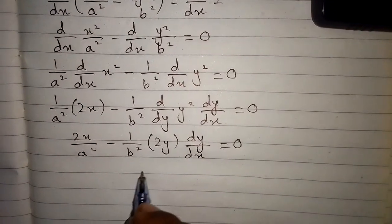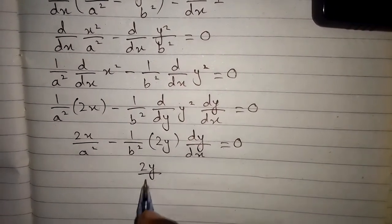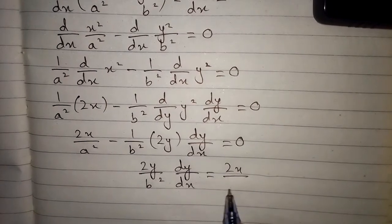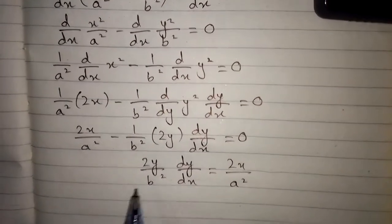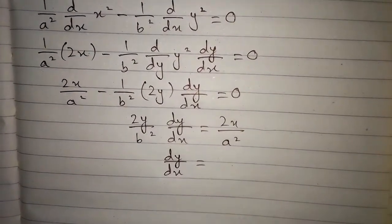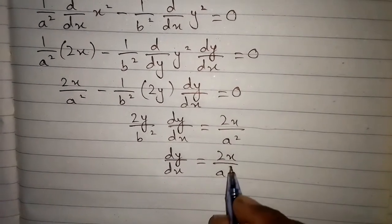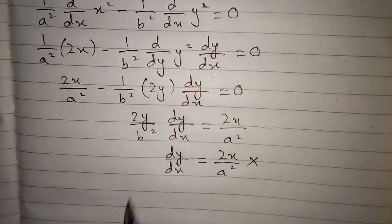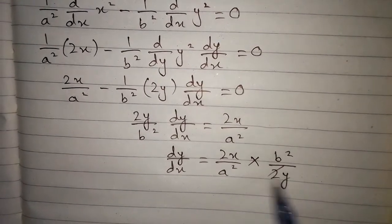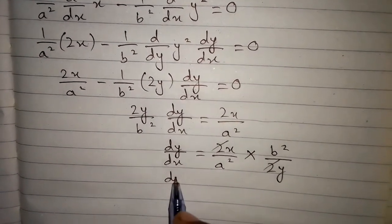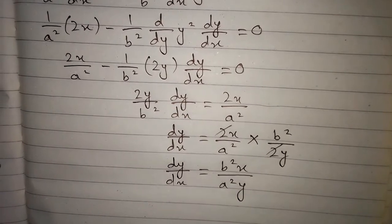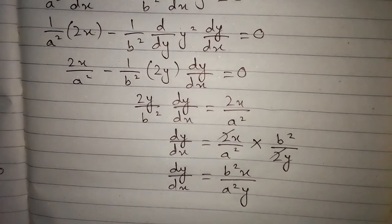After rearrangement, we have (2y/b²)·(dy/dx) = 2x/a². Taking the fraction to the other side, dy/dx = (2x/a²)·(b²/2y). Cancelling the 2s, we get dy/dx = b²x/(a²y). This is the derivative of the above equation.